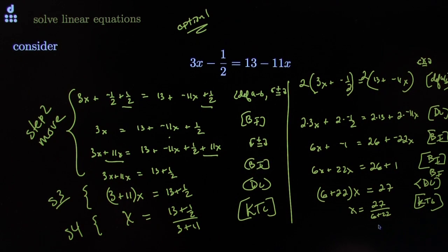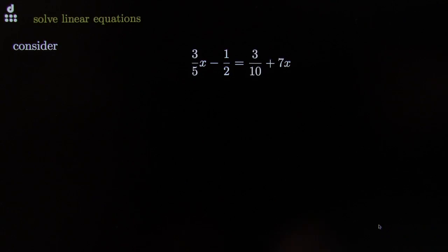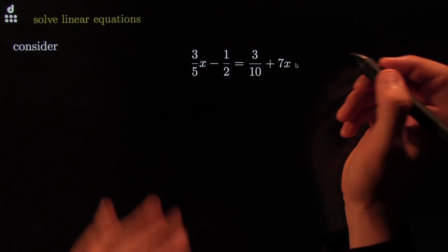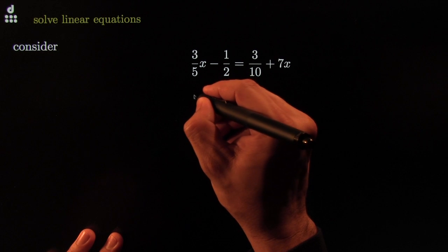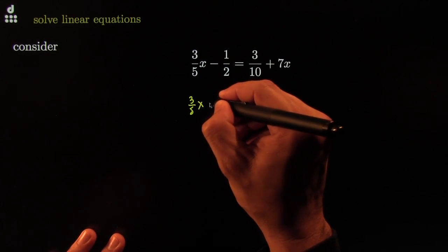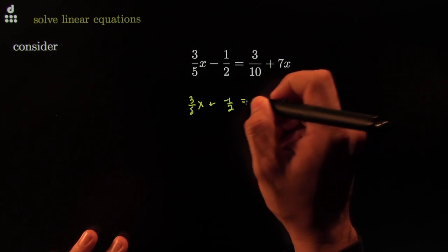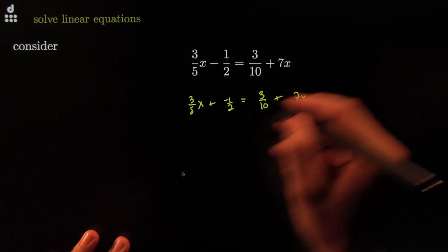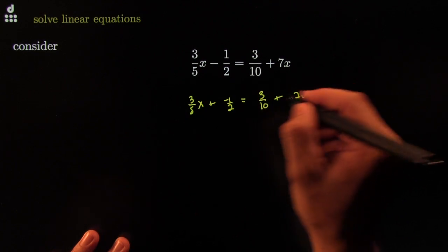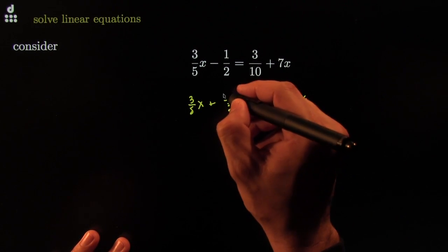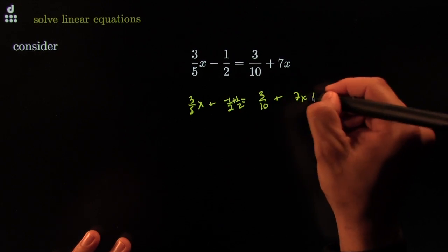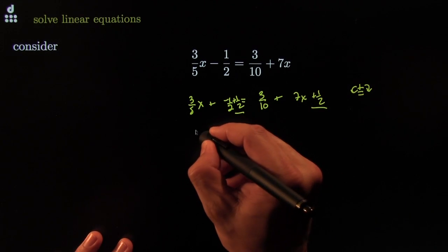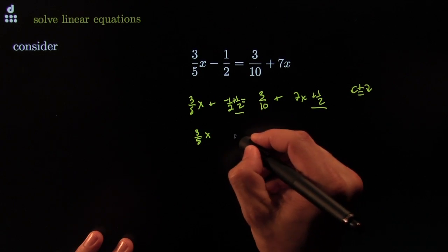Let's try it again. In this new example, if you don't like fractions, multiply both sides by 10 to clean them up. I'm fraction-friendly, so I'll just go with the flow. My step 2 says move all the x's to one side. I'll start by getting rid of the one-half: add one-half to this side and one-half to that side — adding stuff to both sides, cancellation law of addition — that cancels the one-half.